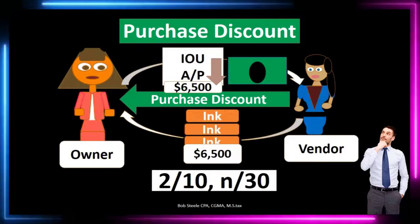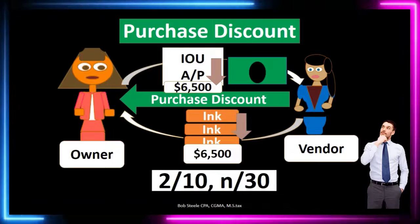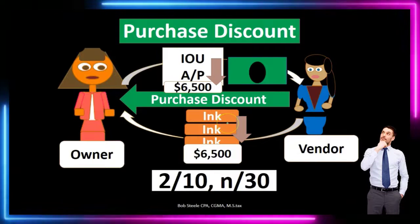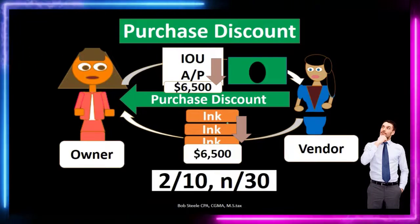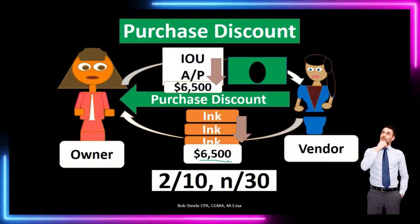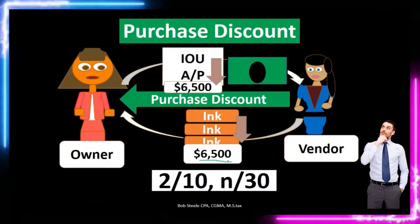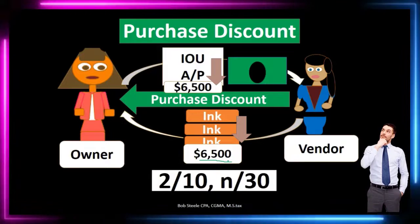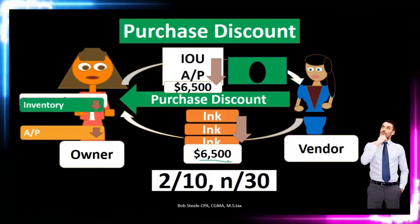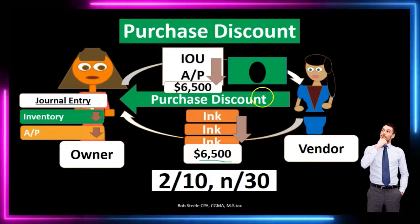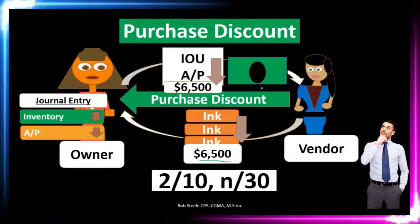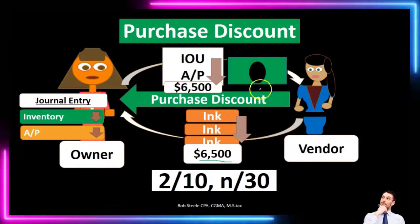We have the IOU on the books at six thousand five hundred, and we're going to reduce that IOU, which reduces the amount eventually paid. The confusing part for most students is that the other side of this transaction requires us to reduce inventory. We put inventory on the books at six thousand five hundred, but we didn't actually pay that full amount — we pay two percent less. So the journal entry reducing accounts payable also reduces inventory, reflecting the lower actual cash paid.